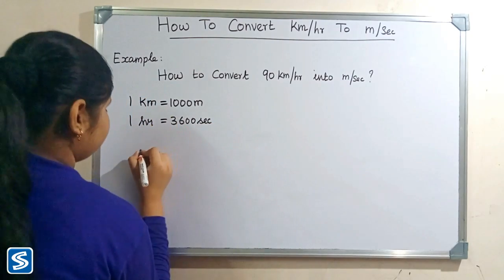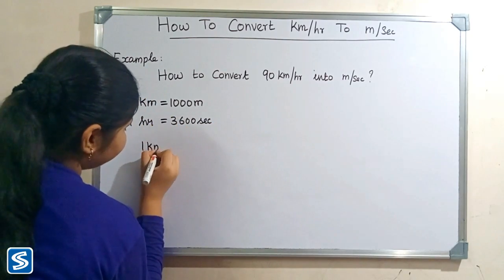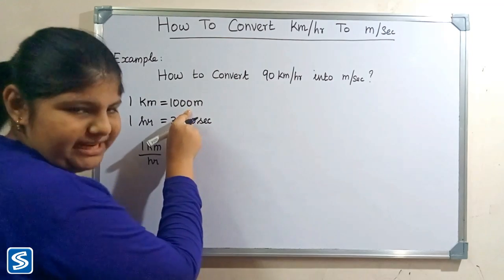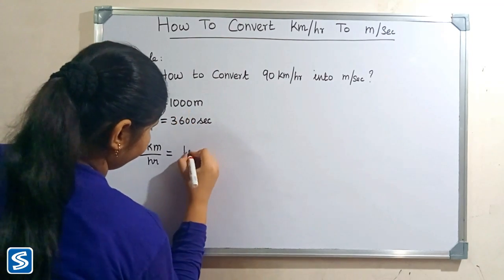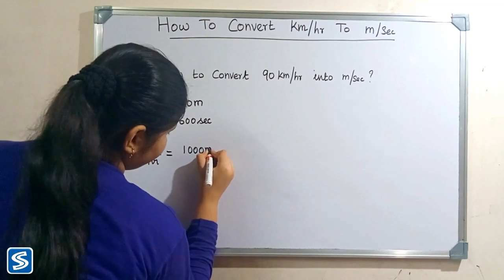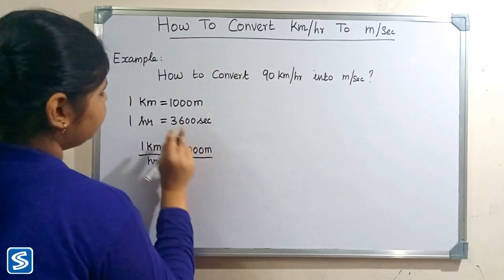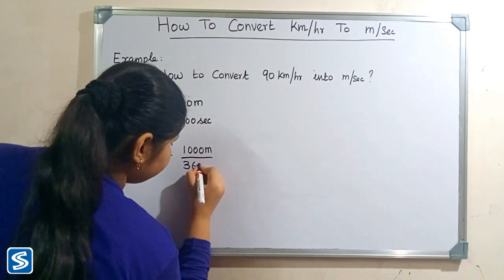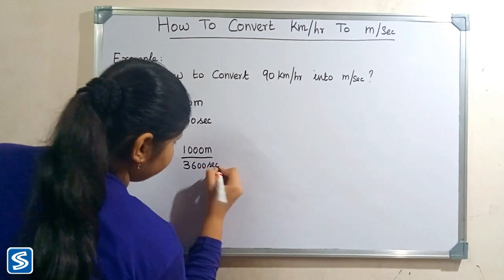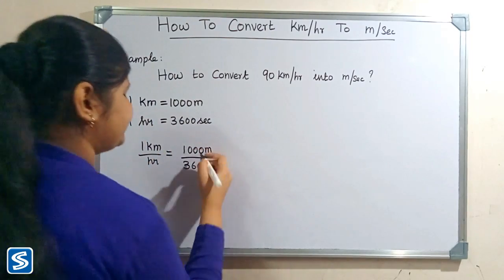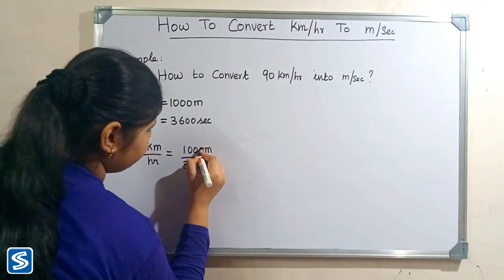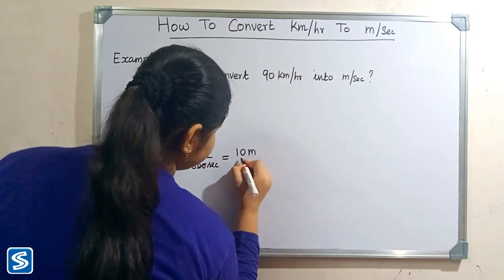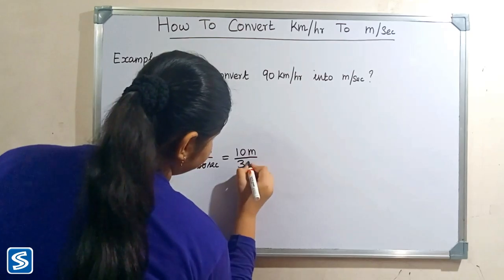So one kilometer per hour is equal to 1000 meters divided by 3600 seconds. Here the zeros get cancelled, giving us 10 meters divided by 36 seconds.